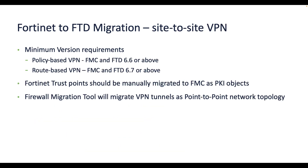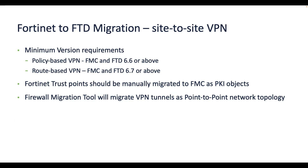Next, we have site-to-site VPN configuration migration from Fortinet to FTD, for which the target FMC and FTD should be 6.6 or above for policy-based VPN and 6.7 or above for route-based VPN. The Fortinet firewall source configuration should be version 5 and above. Trust points need to be manually migrated as PKI objects on FMC, and the tool migrates the tunnels as point-to-point network topology.